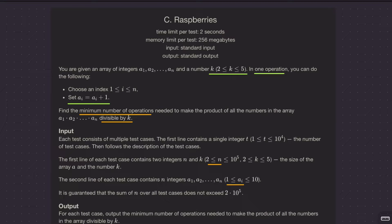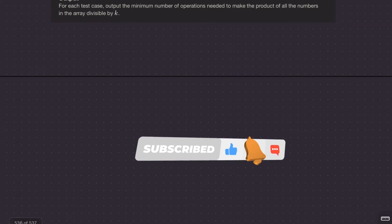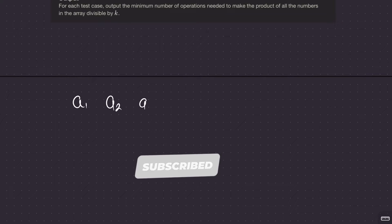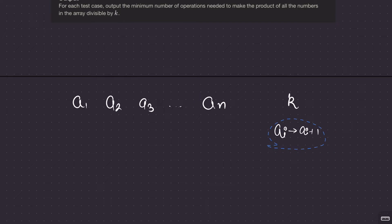This seems to be a very easy question. How are you going to approach it? You are given an array a1, a2, and so on, and a value k. You want to find the minimum number of operations, where each operation makes ai become ai plus 1, such that the product becomes divisible by k. You can look at the examples and try to make observations.